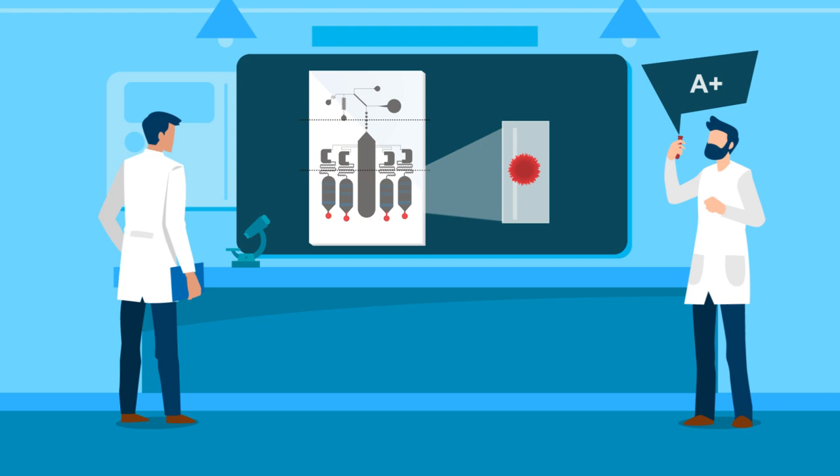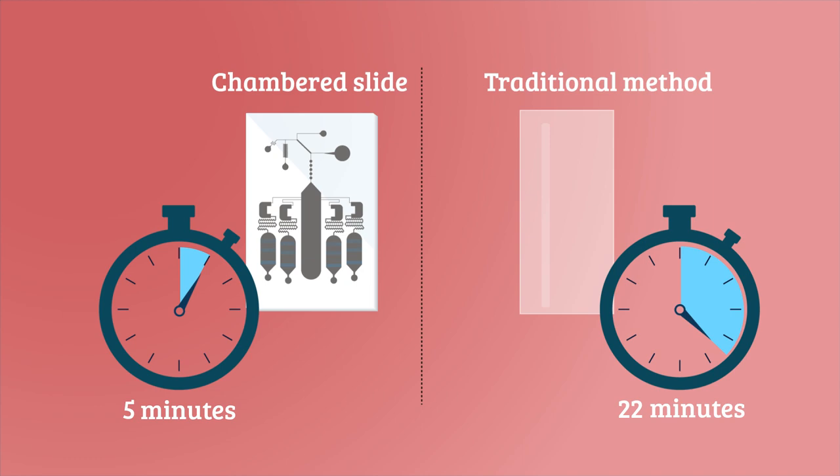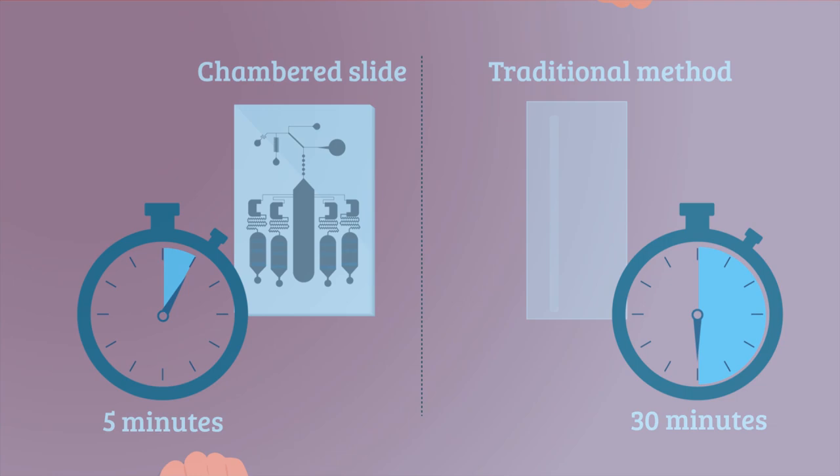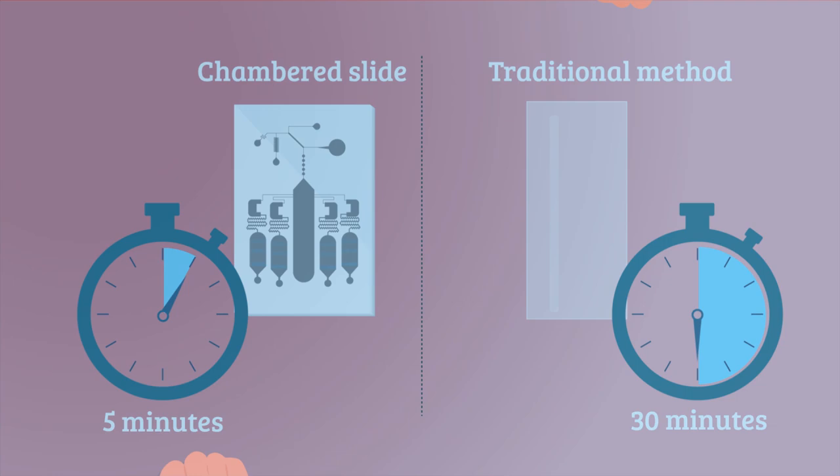This novel device is highly accurate and can yield results within five minutes, six times faster than traditional methods. It can be used by medical staff in emergency rooms to determine the blood type of trauma patients within minutes, saving time and increasing patient survival rates, as well as saving costs on expensive equipment.